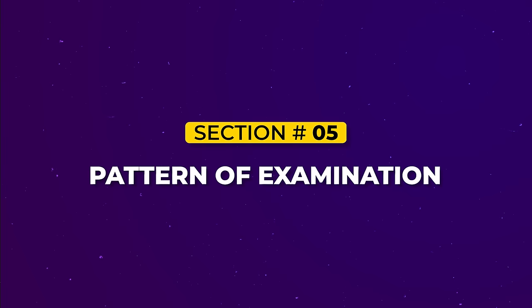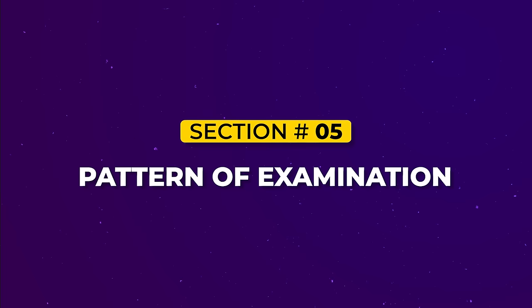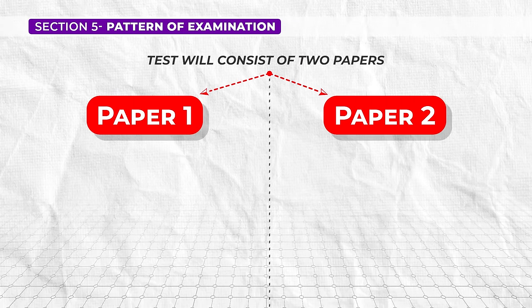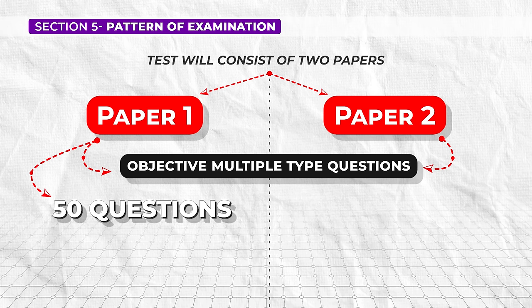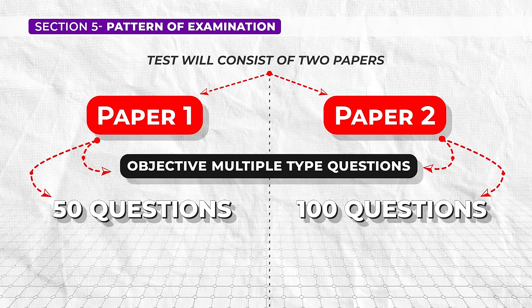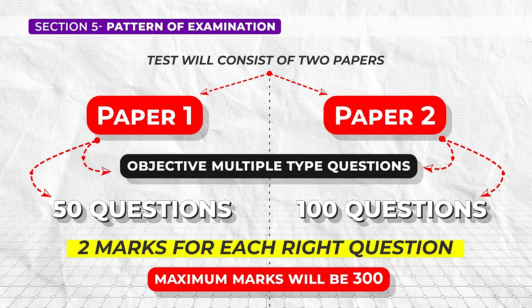Section 5: Pattern of Examination. Talking about the pattern of examination, it is the same as it was previously. The test will consist of two papers — Paper 1 and Paper 2 — both consisting of objective multiple-choice questions. Paper 1 will have 50 questions and Paper 2 will carry 100 questions. If your answer is correct, you will score 2 marks each. Thereby, the total number of questions is 150 and the maximum marks will be 300.